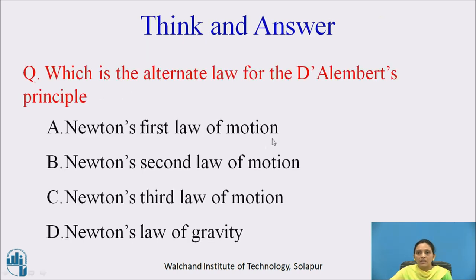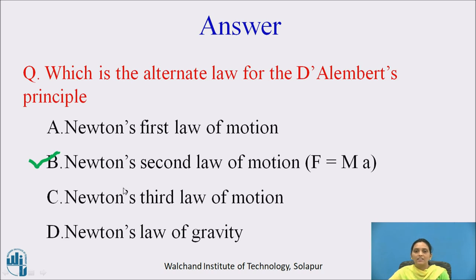Think and answer: which is the alternate law for D'Alembert's Principle? The options are Newton's first law of motion, Newton's second law of motion, Newton's third law of motion, and Newton's law of gravity. The answer is Newton's second law of motion, because it states that the external force acting on a body equals mass times acceleration — F = Ma — which is directly used in D'Alembert's Principle.